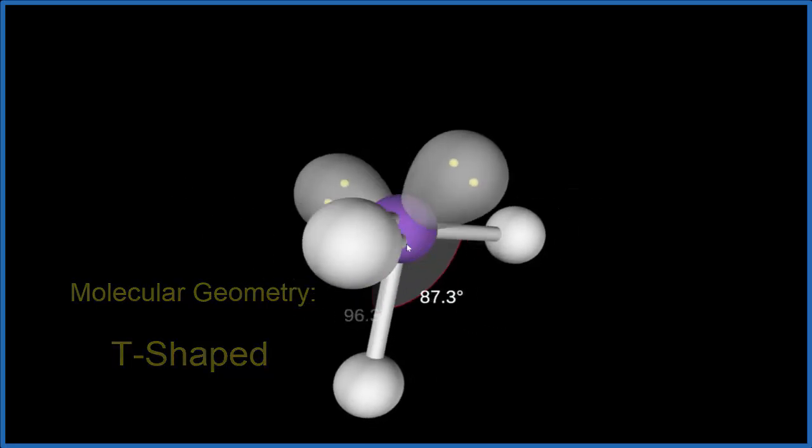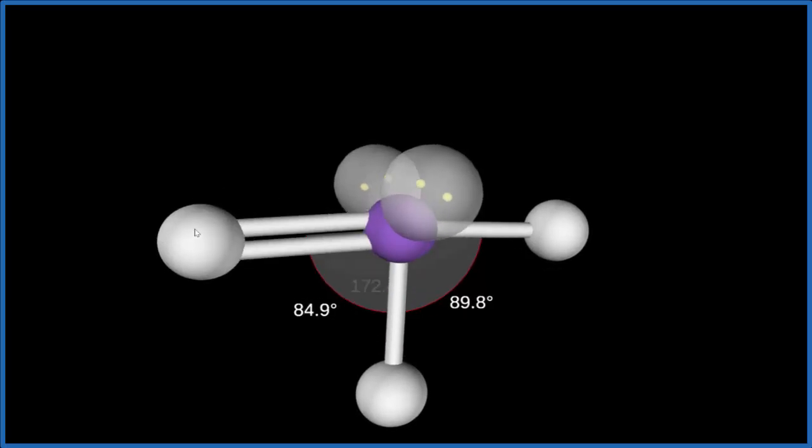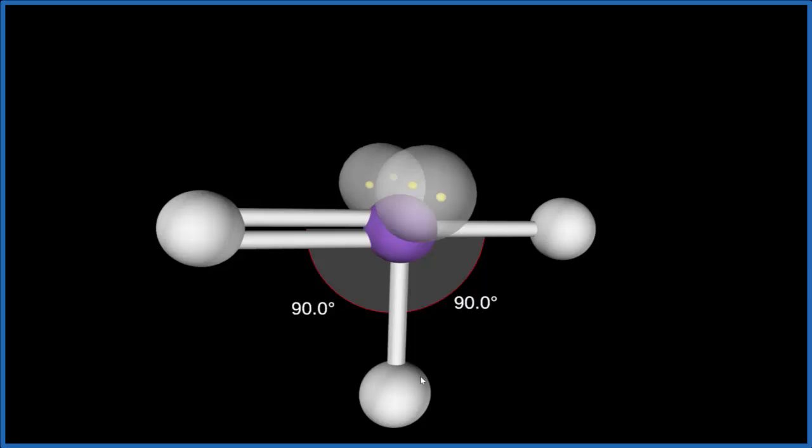Those bond angles here should be about 90 degrees. So when we have 2 lone pairs and 3 atoms bonded, we get a T-shaped molecular geometry.